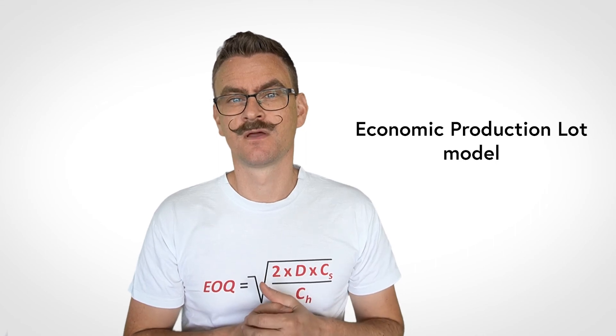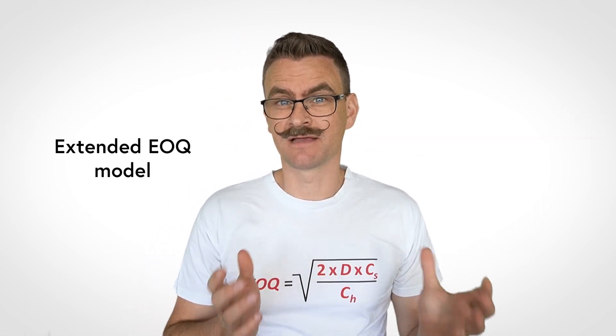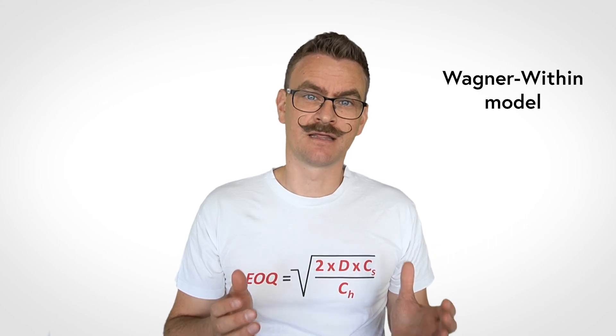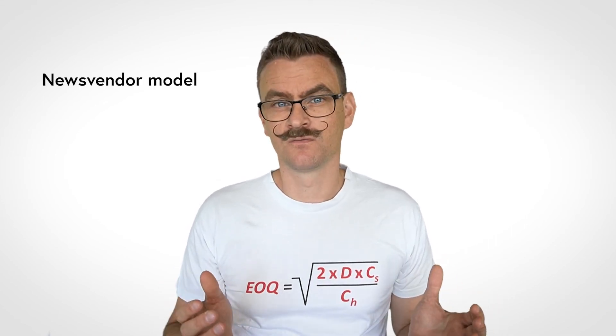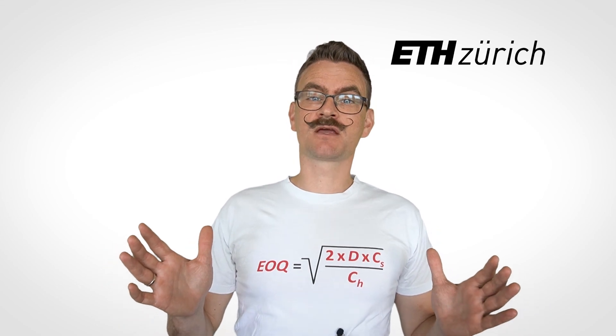If you think the EOQ formula seems far too simple for real life, then no problem. Operations research has developed inventory models for almost any situation. Examples include the economic production lot model, which accounts for production lead times, or the extended EOQ model, which accounts for safety stocks and delivery lead time, or the Wagner-Whitin model, which accounts for demand variation and allows dynamic lot sizing, the newsvendor model, which accounts for dynamic or unknown demand, and QR models, which account for dynamic demands and multiple products. Luckily, most of these models are codified in ERP systems. So all we usually have to do is select the model we want to use and enter the parameters. Then the rest is done by the software. And now you've heard about the economic order quantity model.